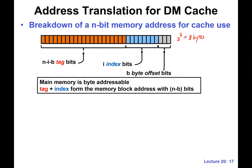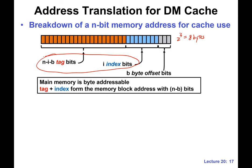Just to make it clear: first, we assume that our main memory is byte addressable — that's why we need the byte offset. If you combine tag plus index, these basically form the memory block address. Each block, in this case, has two to the B bytes, and here B is three, so we have eight bytes in this specific example.